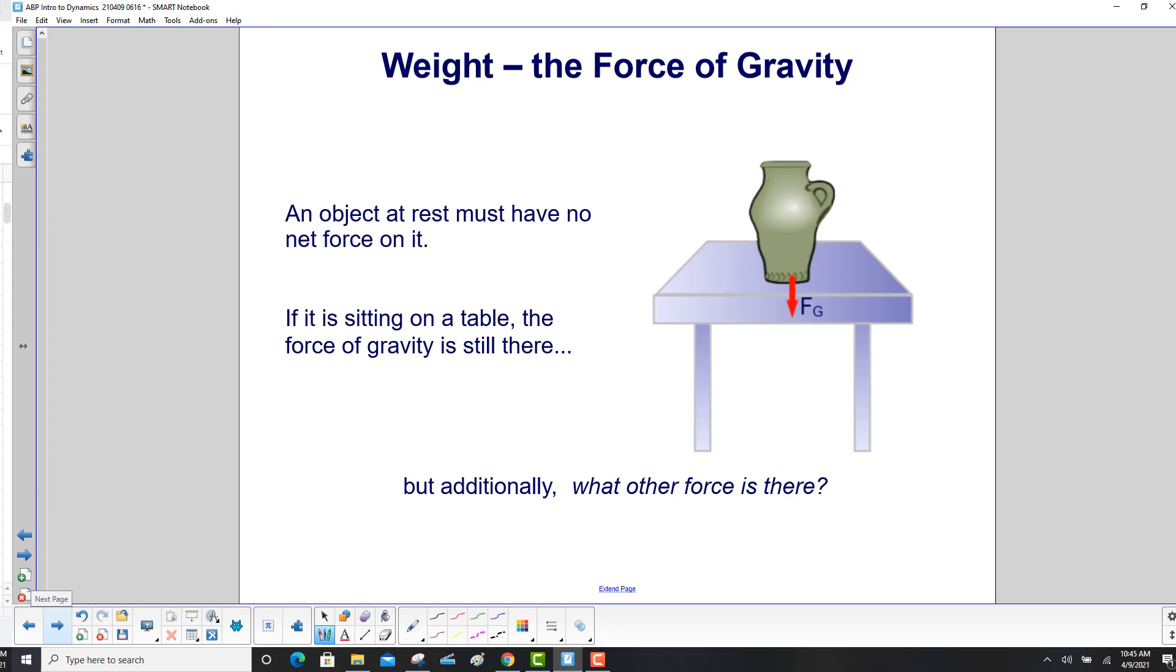An object at rest must have no net force on it. If it did have a net force, it would have an acceleration and it would move. So if it's sitting on a table, like this vase, the force of gravity is still there. But additionally, what other force is there so the vase doesn't move?